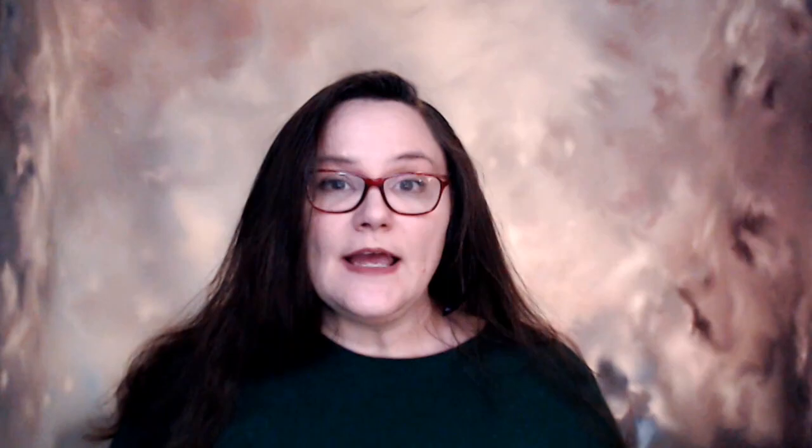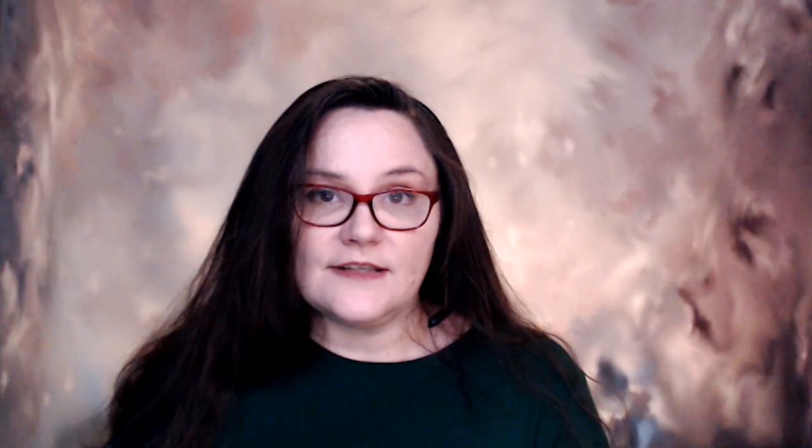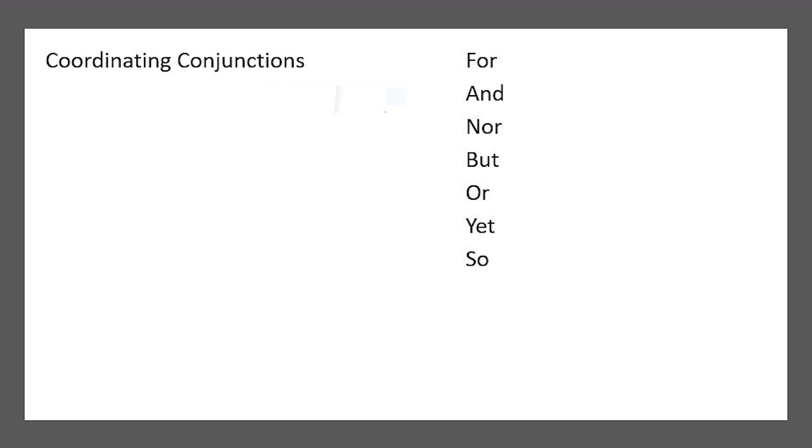The second rule for comma use is to combine two complete thoughts. A complete thought has a subject and a verb and can stand by itself. If you have two complete thoughts, you can separate them with a comma, but you also need a coordinating conjunction. There are very specific coordinating conjunctions: for, and, nor, but, or, yet, so.